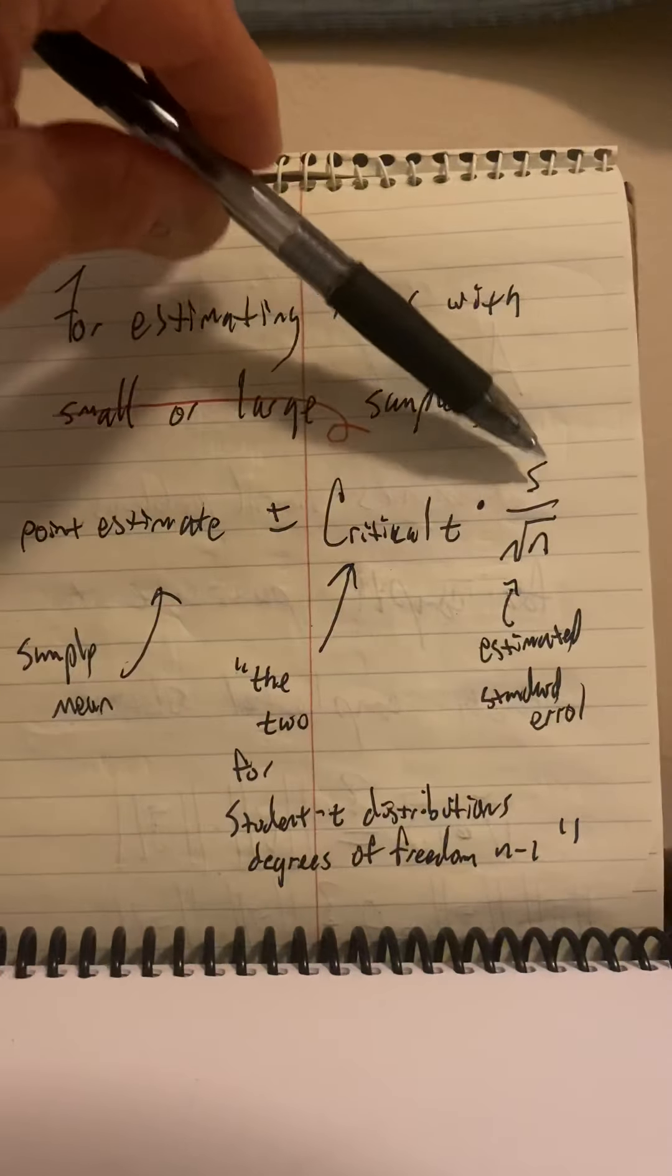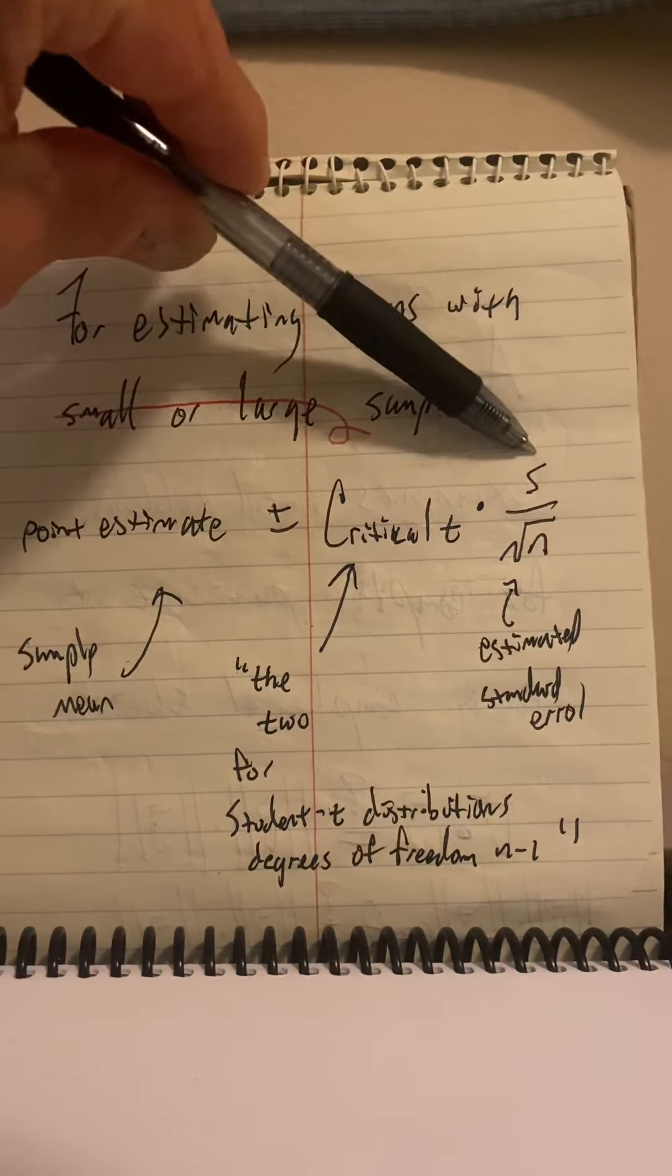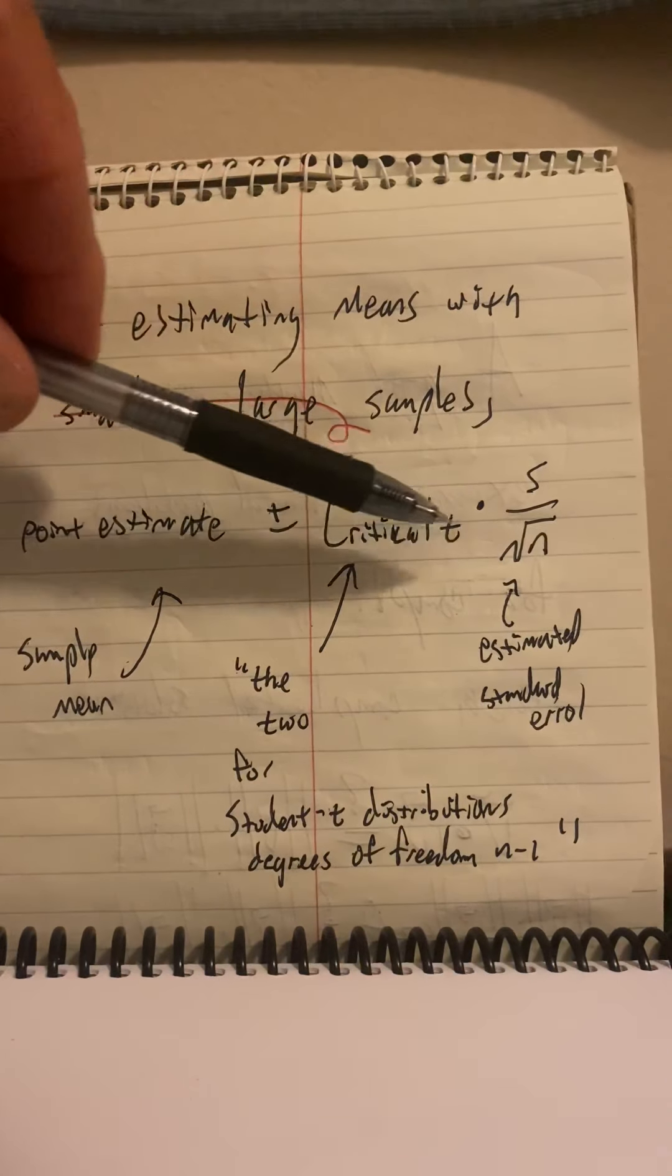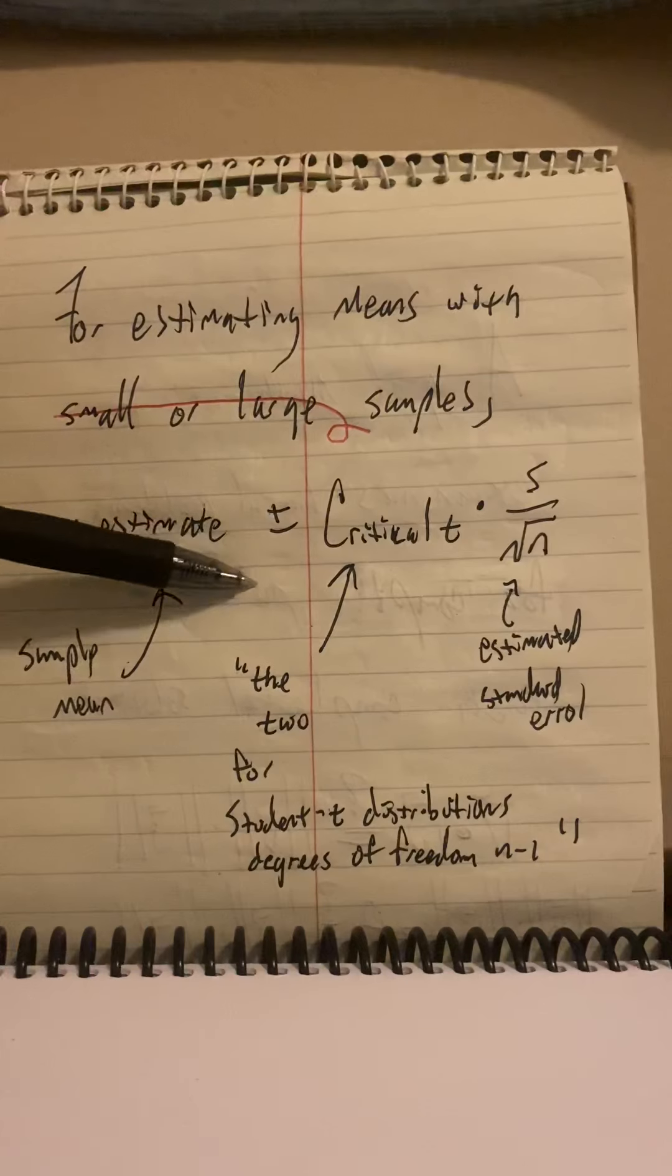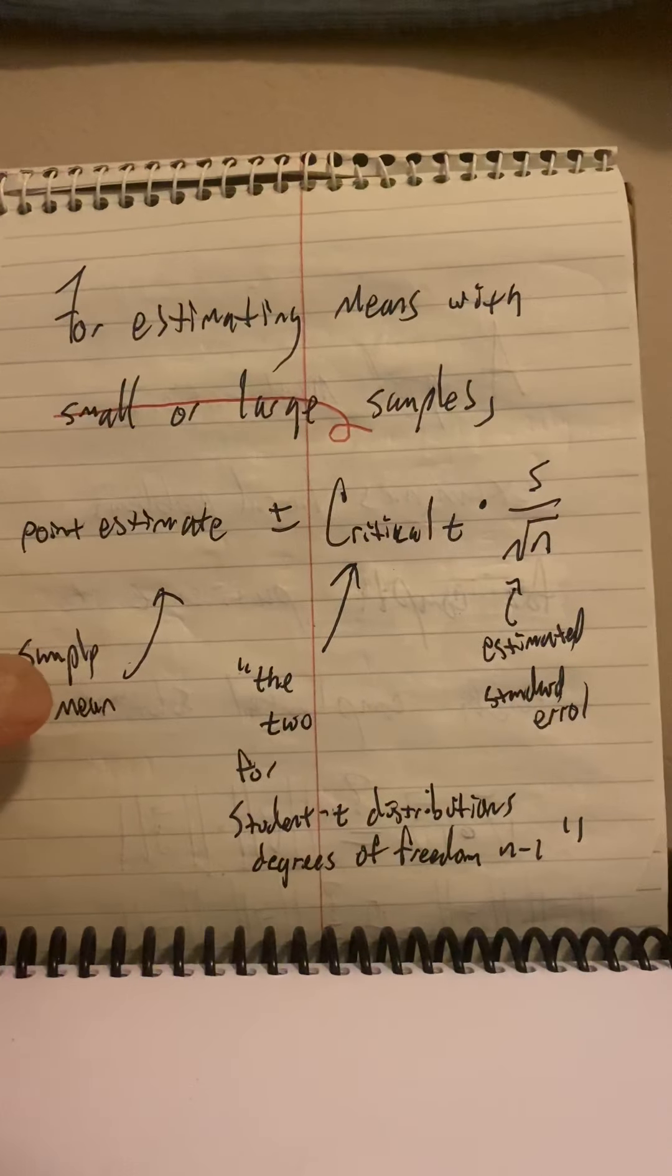We multiply it by our estimate for the standard deviation of the sampling distribution. The standard deviation for a sampling distribution is called a standard error. So this is our estimate for the standard error. And the way we get it is we take the sample standard deviation and divide it by the square root of the sample size. And we add and subtract that to our point estimate, which is just the sample mean, and we have our interval estimate.